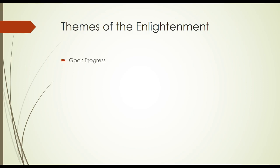First, some themes of the Enlightenment. Keep in mind that the goal of the Enlightenment was progress — that's what these philosophers were seeking — to bring humanity towards a better, more peaceful, more organized existence. They considered the best methods to achieve progress were reason, science, liberty, and toleration.